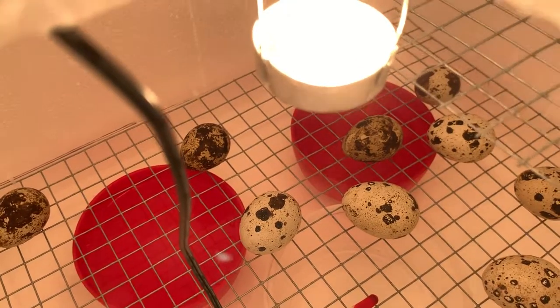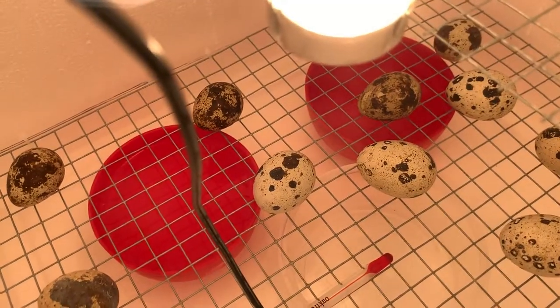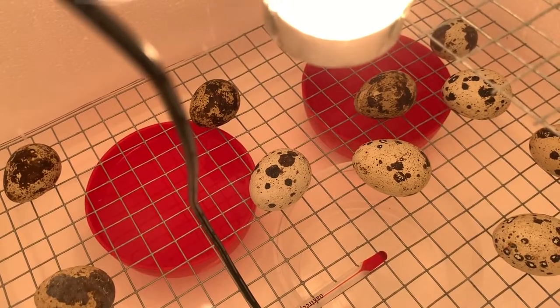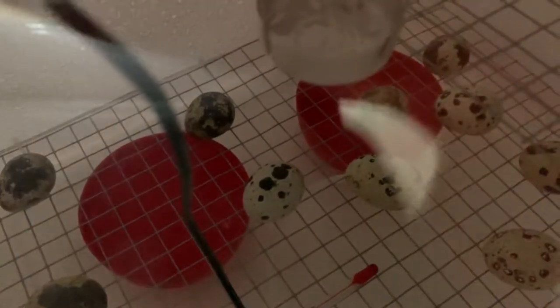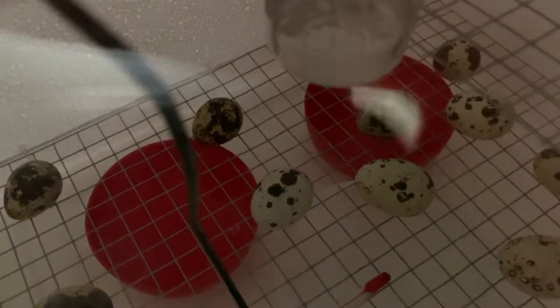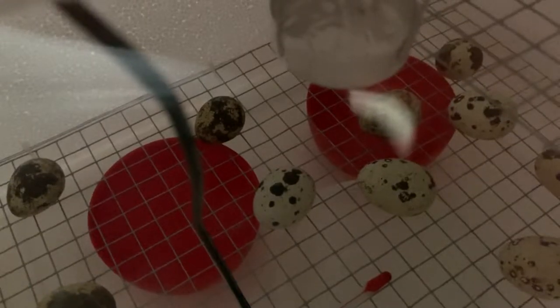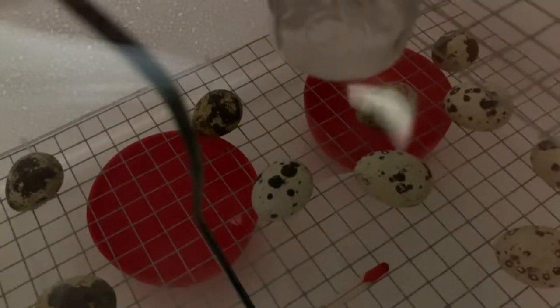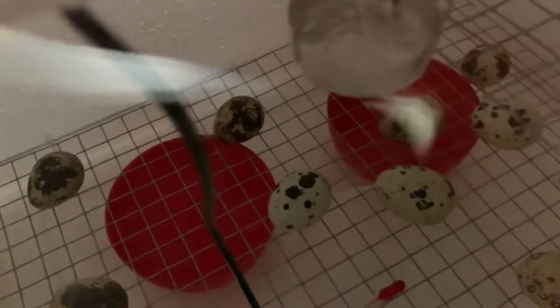On day 15 once they do start hatching, which could probably be day 17 is when they should start to hatch, they can be in there on their own for up to 72 hours without any food or water. They've got enough nutrients in their stomachs from the egg apparently from what I've been researching. But I'll probably leave them in there for 48 hours, I don't fancy leaving them in there for three days.